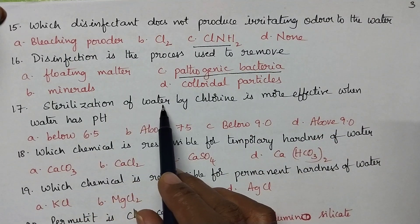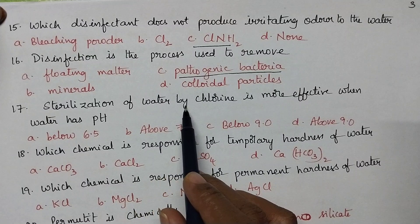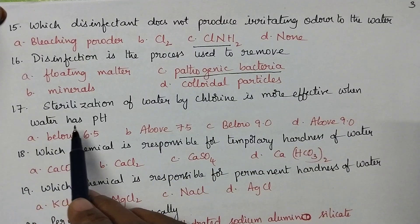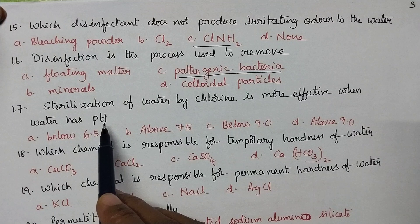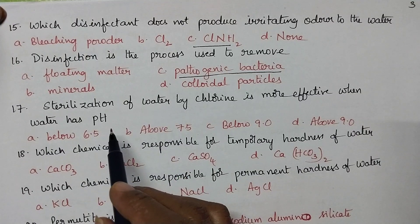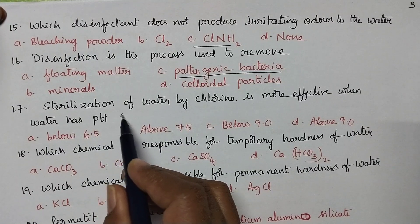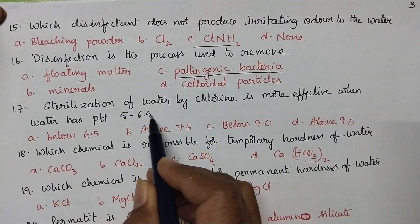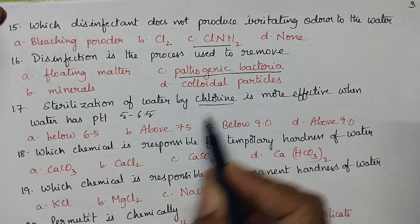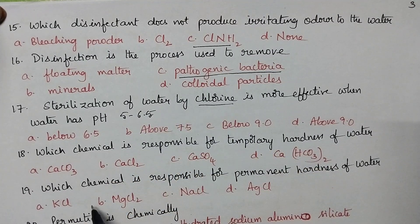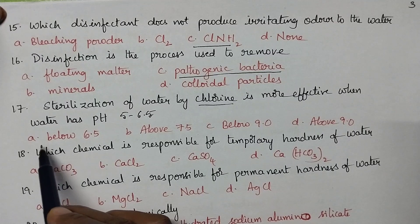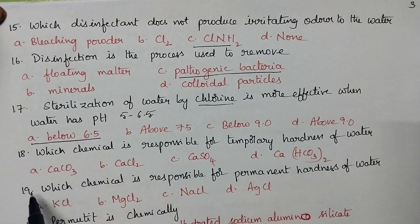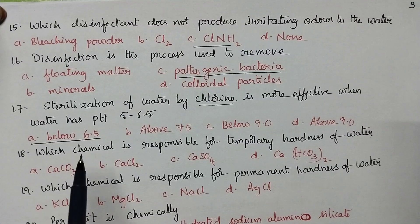Sterilization of water by chlorine is more effective when water has a pH between 5 to 6.5. So, the chlorination process is effective and the pH is supposed to be maintained below 6.5.